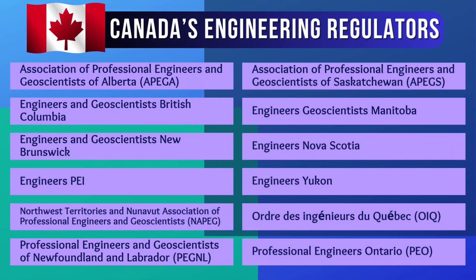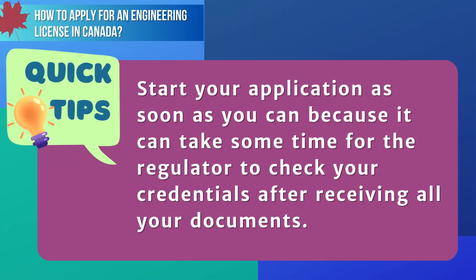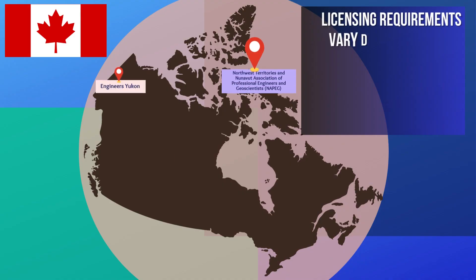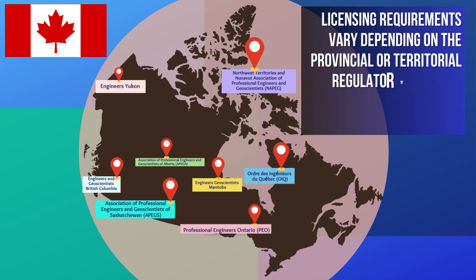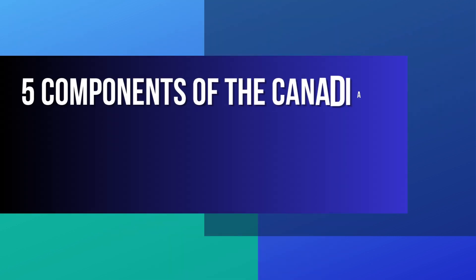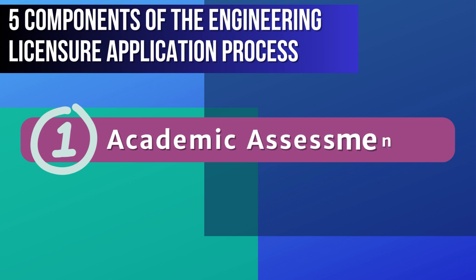Here's a list of Canada's engineering regulators in different provinces and territories. Start your application as soon as you can, because it can take some time for the regulator to check your credentials after receiving all your documents. The regulator may also require you to do more, such as taking a test or getting more education and experience. The specific licensing requirements may vary depending on which provincial or territorial engineering regulator you intend to apply, but there are five general components of the engineering licensure application process.